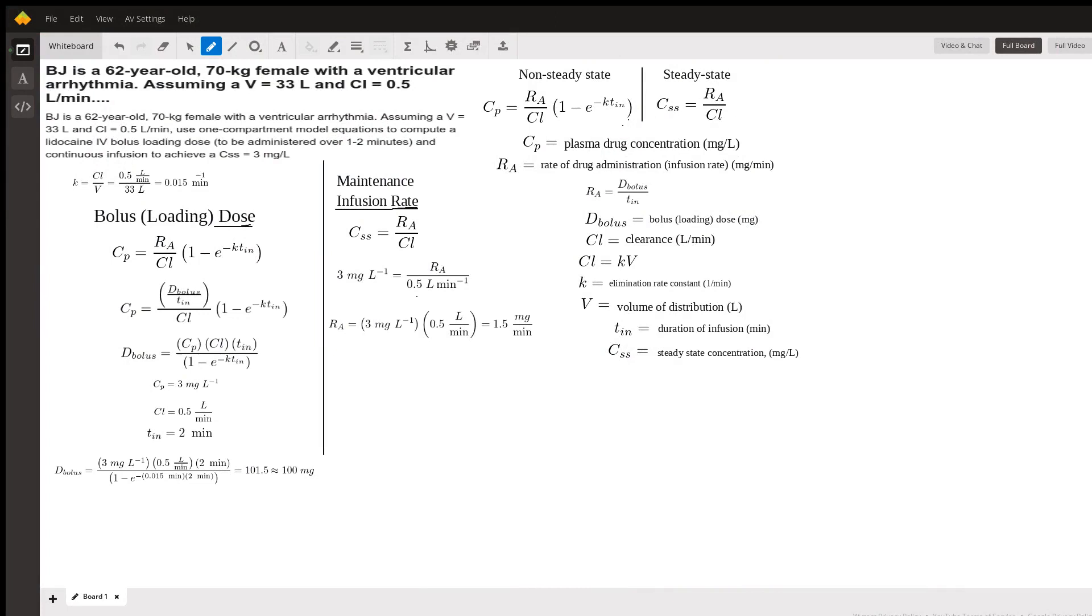B.J. is a 62-year-old, 70-kilogram female with a ventricular arrhythmia. Assuming a volume of distribution of 33 liters and clearance of 0.5 liters per minute, use one-compartment model equations to compute a lidocaine IV bolus loading dose to be administered over one to two minutes and continuous infusion to achieve a steady-state concentration of three milligrams per liter.